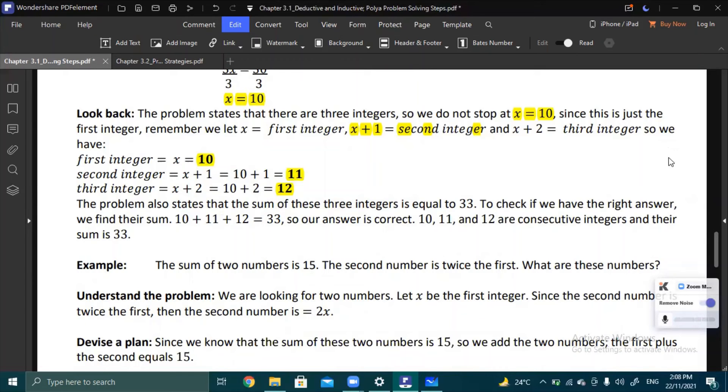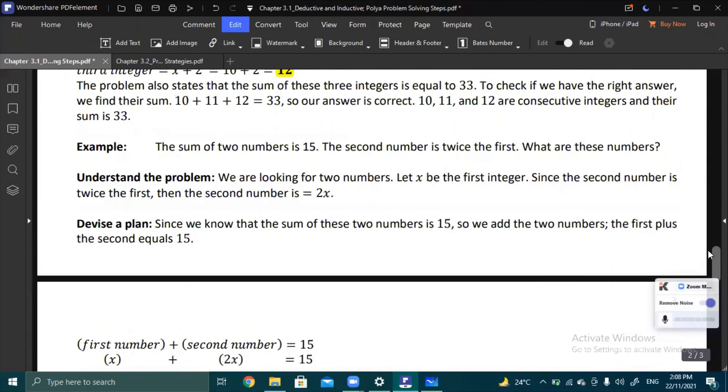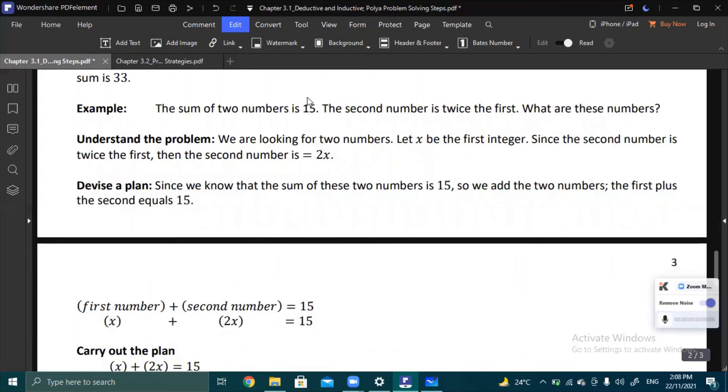Another example, looking at the pattern in this next example. The sum of two numbers is 15. The second number is twice the first. What are these numbers? You have a clue there that you have two numbers. Another clue is that their sum is 15. And then another clue: the second number is twice the first. We need to identify these two numbers. Understanding the problem: same as before, we let a certain variable to represent one of the numbers.